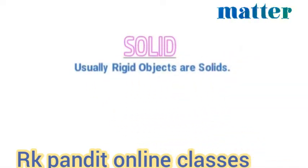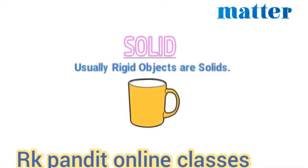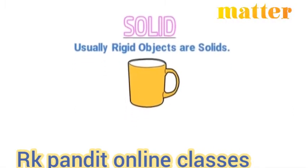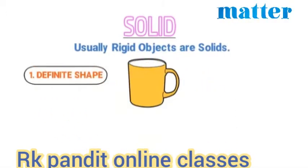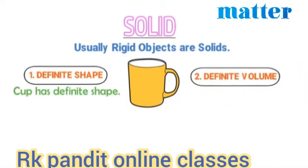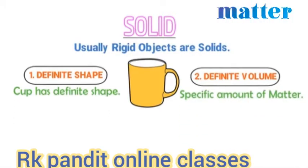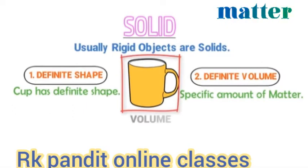Usually, rigid objects are solids. For example, this curve. The first property of solid objects is that they have a definite shape. The shape of this curve is definite — its shape doesn't change. Even if you carry it to space, its shape would remain the same. Secondly, solids have definite volume. For instance, you can put a specific amount of water or matter in this curve, and its volume will also remain the same even if you carry it anywhere.